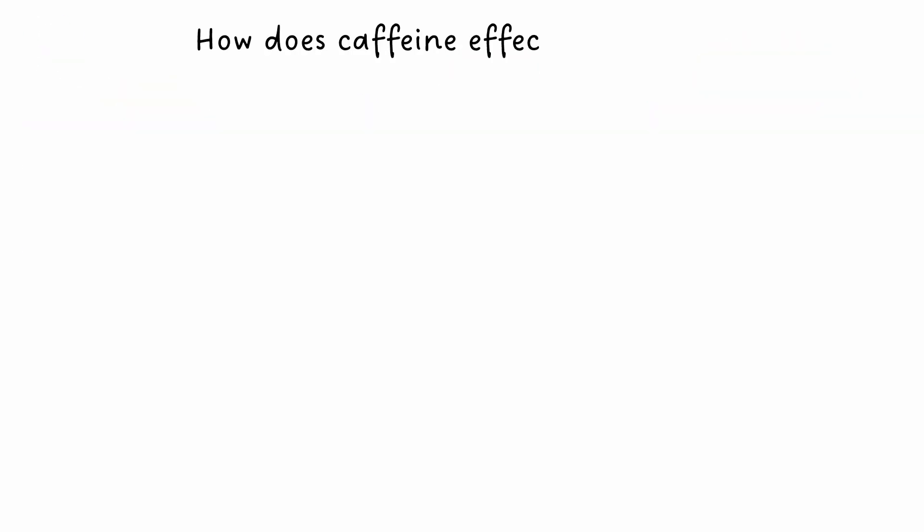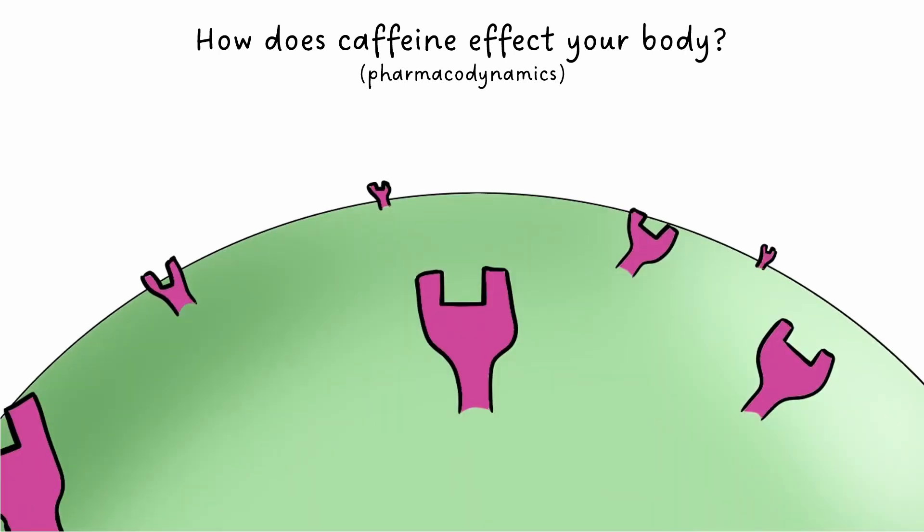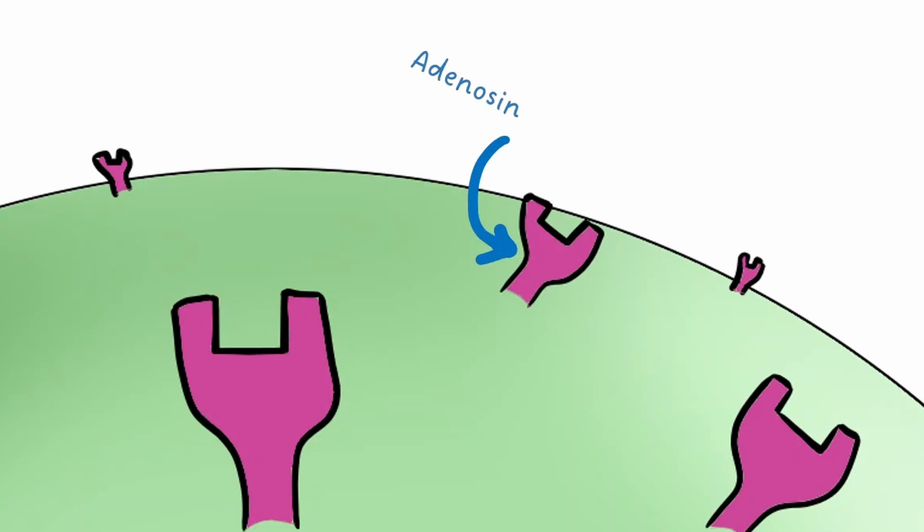So, how does caffeine affect your body? The process of a drug influencing your body's physiology is called pharmacodynamics. For caffeine, the pharmacodynamic effects are mostly derived from its influence on adenosine receptors.